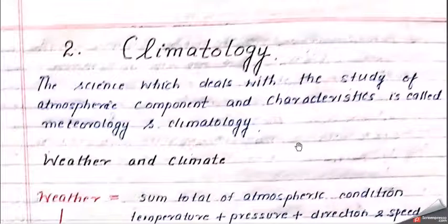So let's start. What is climatology? First of all, it is a science which deals with the study of atmosphere components and characteristics — this is called meteorology and climatology. It is a science in which various components of the air — weather, pressure, temperature — everything is related, and finding the relation between these is meteorology and climatology.